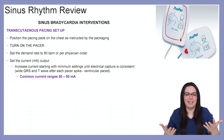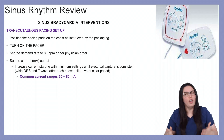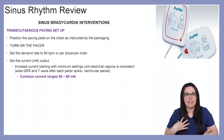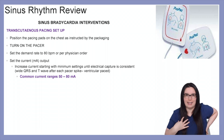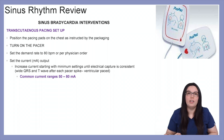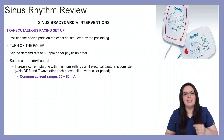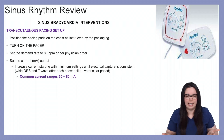To set it up, position the pacing pads on the patient as instructed by the packaging. Normally one pad goes over the right anterior chest wall and the left pad goes on the left midaxillary line next to the heart. Turn on the pacer first and set the demand rate to 80 beats per minute, or whatever the physician tells you to set it to.